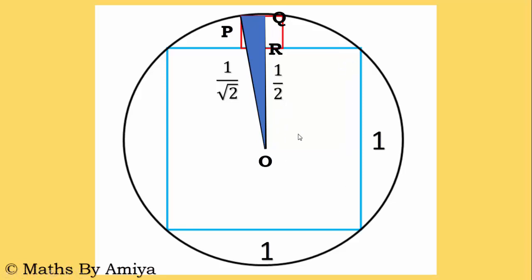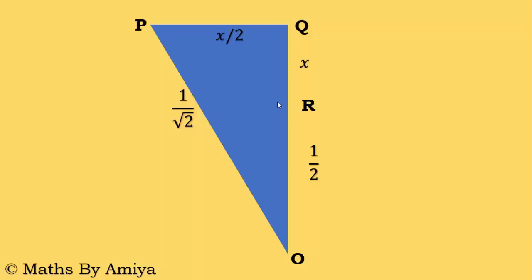Now we need to work on the red square. Assume QR is x. Since the side of red square is x, we can say PQ is x by 2. Radius perpendicular is the chord bisector. Now we have to work on triangle OPQ.